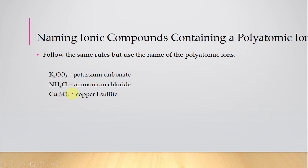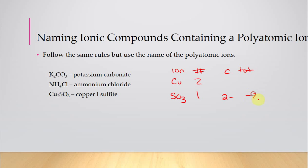For copper(I) sulfite: ion, number, charge, total — copper and the sulfite ion. Sulfite has a −2 charge, which you know because you memorized it. We have two coppers and one sulfite ion; there are no parentheses indicating more than one, so it's just one sulfite. That gives a total negative of −2. In order to make a neutral compound, the total positive must be +2; 2 ÷ 2 = +1 charge per copper. So this is copper(I) sulfite.